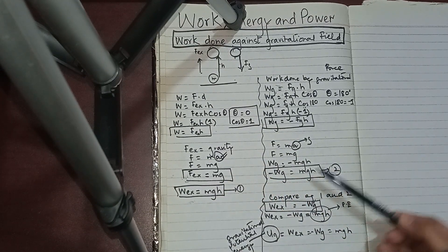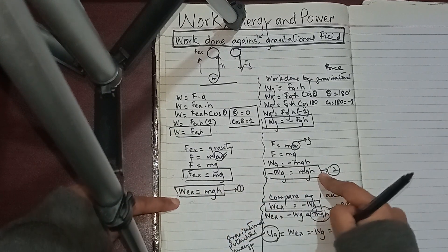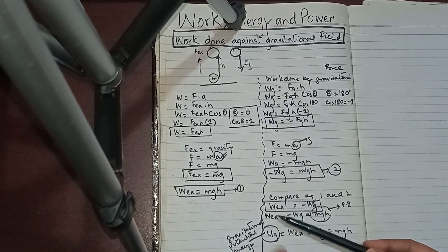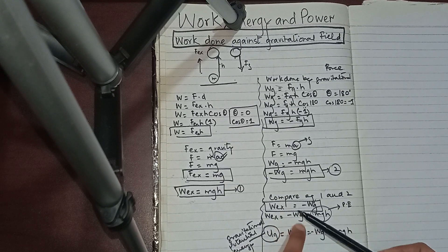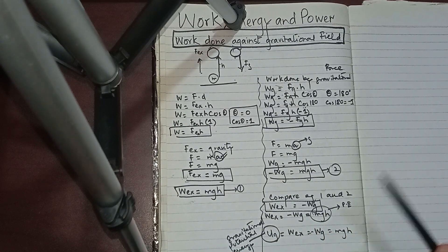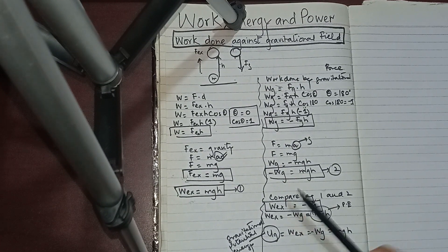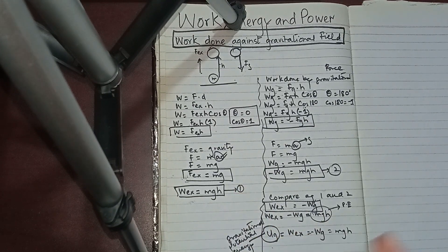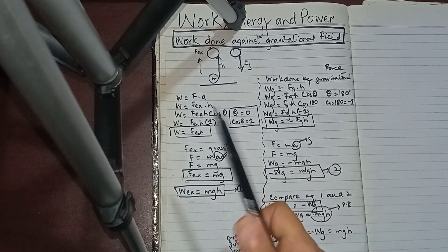Comparing both equations, the work done by the external force equals the work done against gravity, and both equal mgh. This value equals the potential energy, which we call gravitational potential energy. So gravitational potential energy = work done by external force = work done against gravity = mgh. If you have any queries, you can always ask me in the comments. Till then, please take care of yourself. Allah Hafiz.